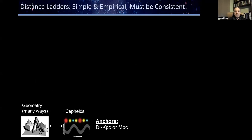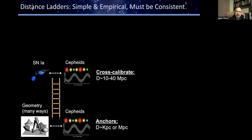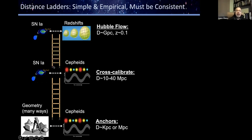Distance ladders are simple and empirical, but must be applied in a consistent manner. Our distance ladder has three steps. The first rung uses geometry to reach the distance to Cepheid variables and calibrate their luminosity — the anchor step, done at distances of kiloparsecs to megaparsecs. Step two identifies nearby galaxies that hosted a Type Ia supernova, then uses the Hubble Space Telescope to find Cepheid variables in those galaxies to calibrate the supernovae. Finally, Type Ia supernovae can be seen at high redshift, and we do that out to about redshift 0.1 to measure the present expansion rate.